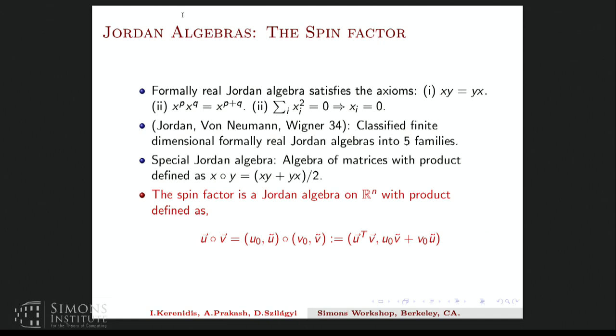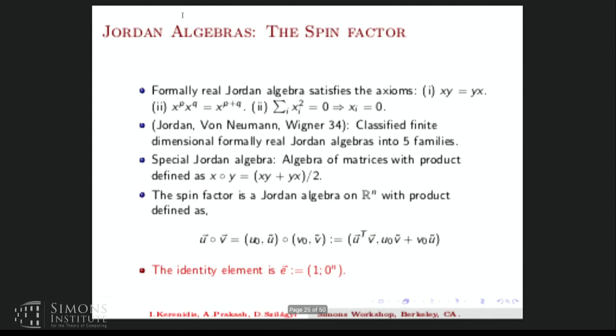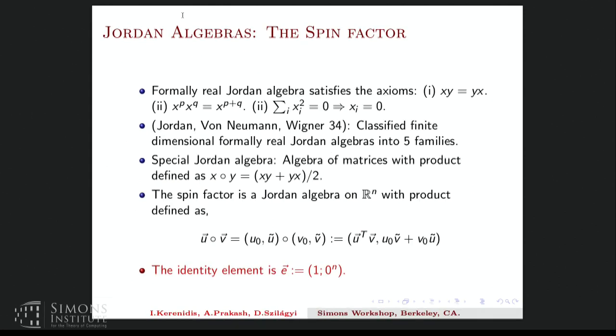So it is splitting the vector into one coordinate and the rest. And then the first coordinate is the inner product of the vectors, and the second is a symmetrized version of the rest appropriately added. And the identity element for this operation is 1, 0, ..., 0 in n dimensions. And it is this Jordan algebra that will be heavily used in the analysis of the SOCP interior point method.